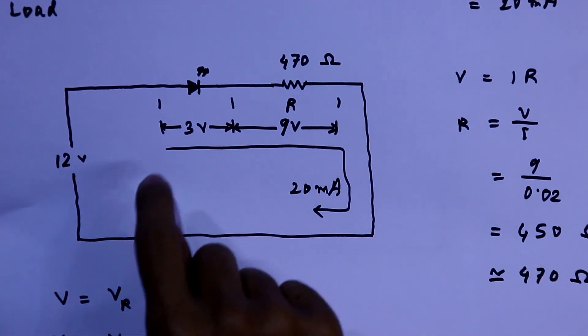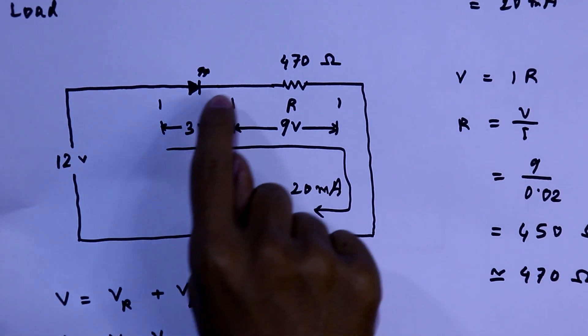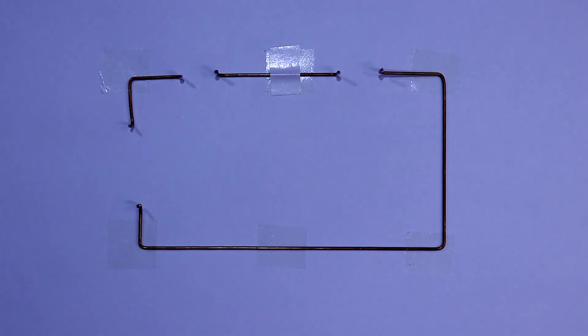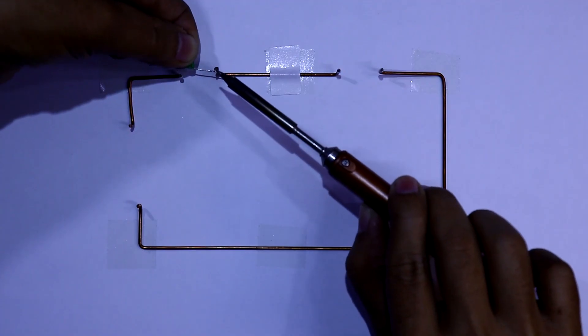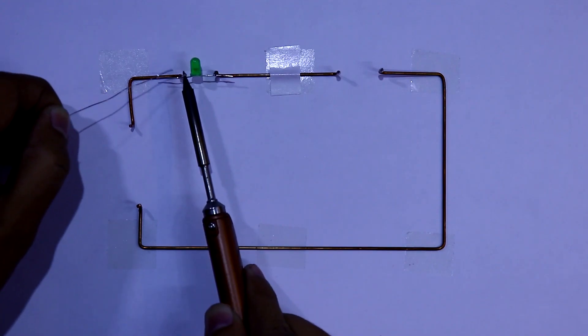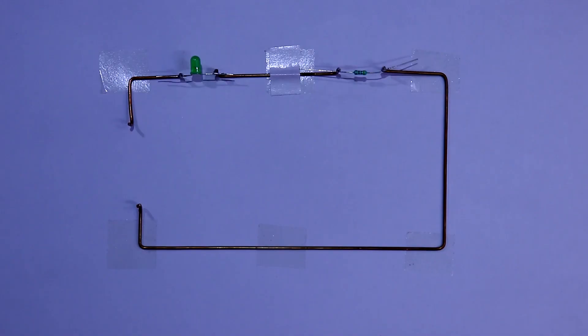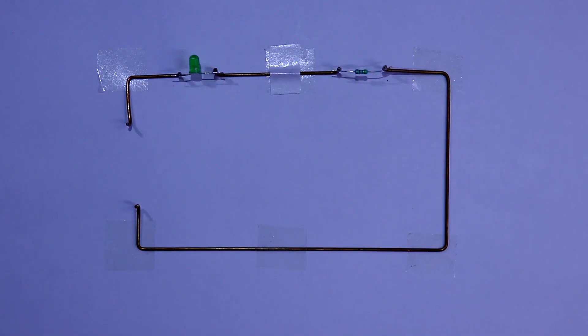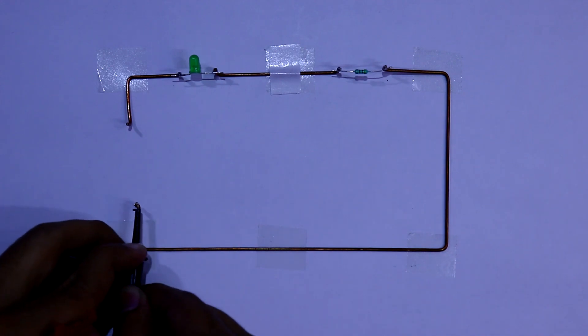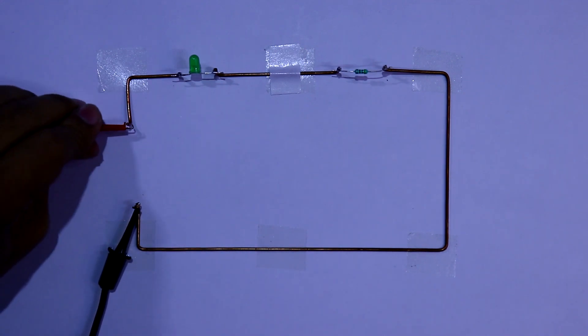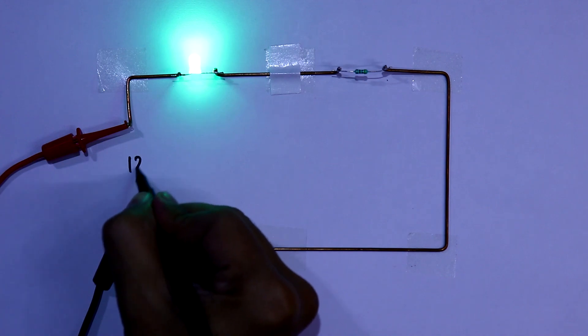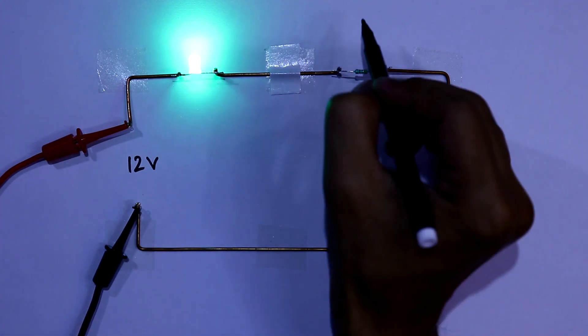According to the circuit, the negative pin of the LED is connected here and the positive this side. So here is negative and positive. 470 ohms resistor. Now I am connecting 12V power supply. Here is negative and positive. So here is 12V. It is 470 ohms.